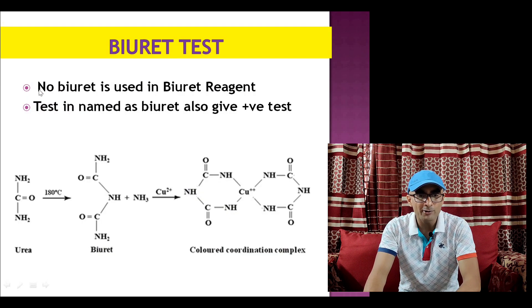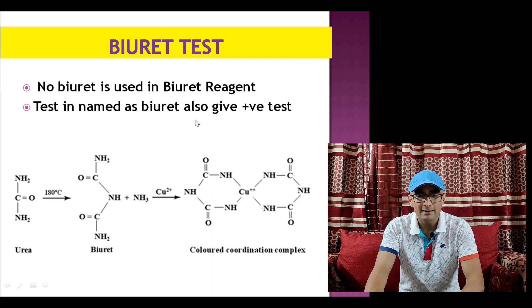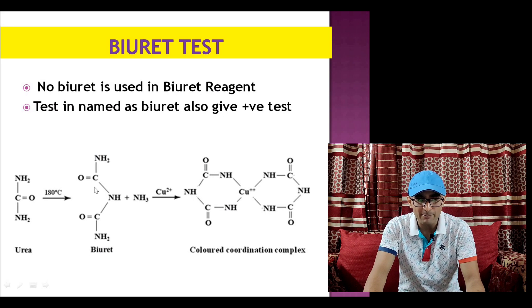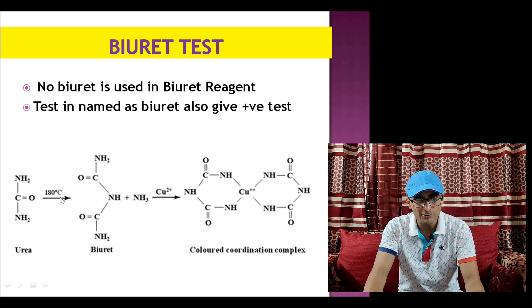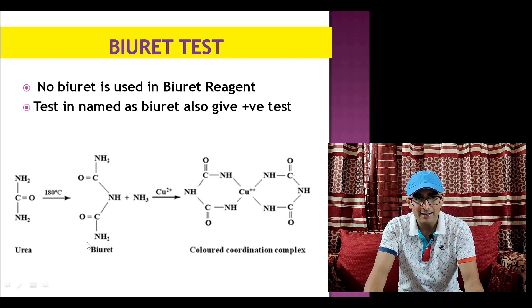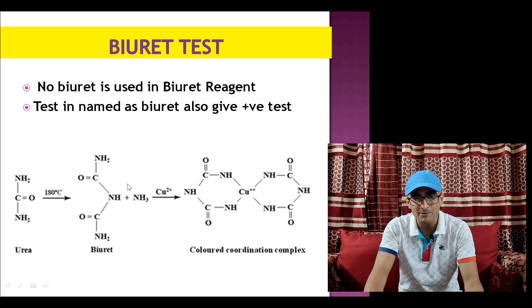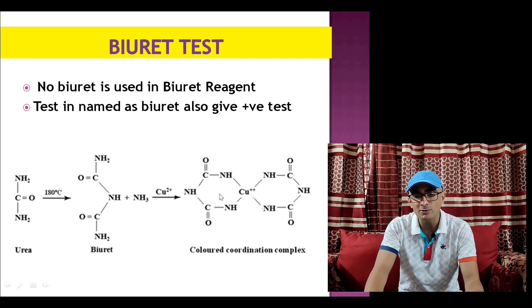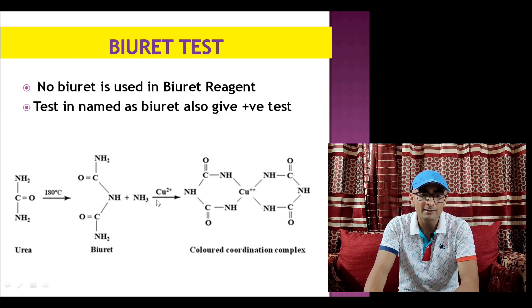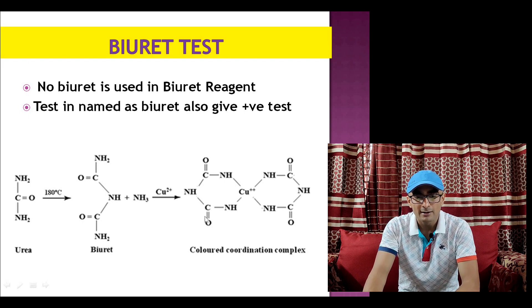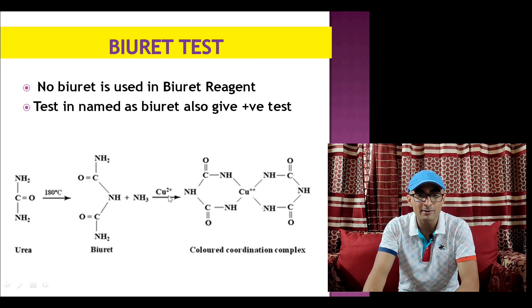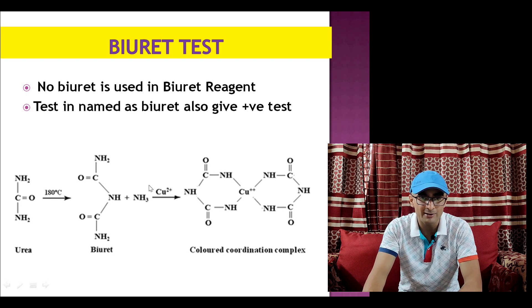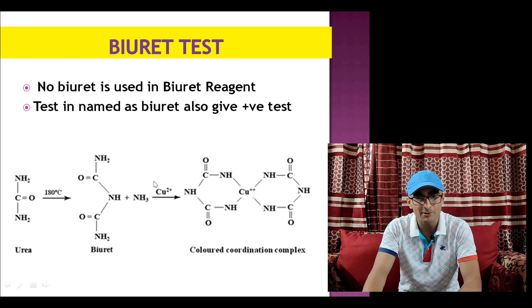In fact there is no biuret used in Biuret reagent in the test. The name came because biuret is a chemical which is produced by heating urea at 180 degrees and this biuret mimics peptide bonds, CO and NH linkages peptide groups, and this biuret also gives positive test with alkaline copper. That's why the test is given name as Biuret test, otherwise in the reagent there is no biuret used for estimation of protein in this method.